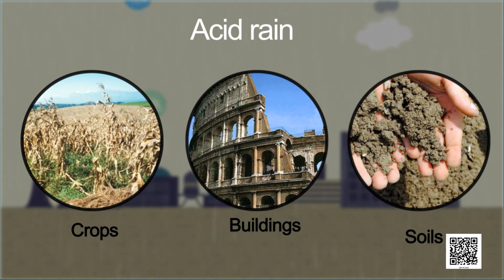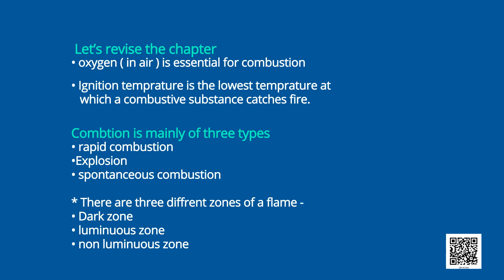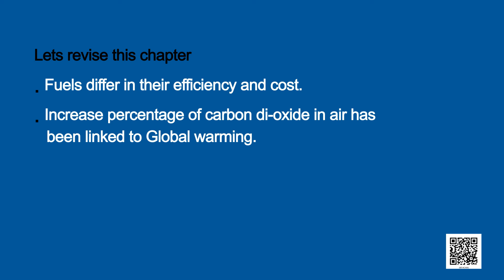Let's revise this chapter. Oxygen in air is essential for combustion. Ignition temperature is the lowest temperature at which a combustible substance catches fire. Combustion is mainly of three types: rapid combustion, spontaneous combustion, and explosion. There are three different zones of a flame: dark zone, luminous zone, and non-luminous zone. Fuels differ in their efficiency and cost. Increased percentage of carbon dioxide in air has been linked to global warming.